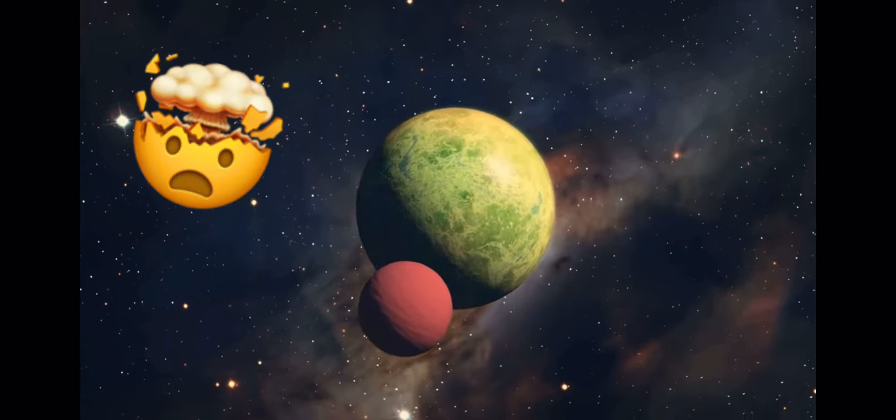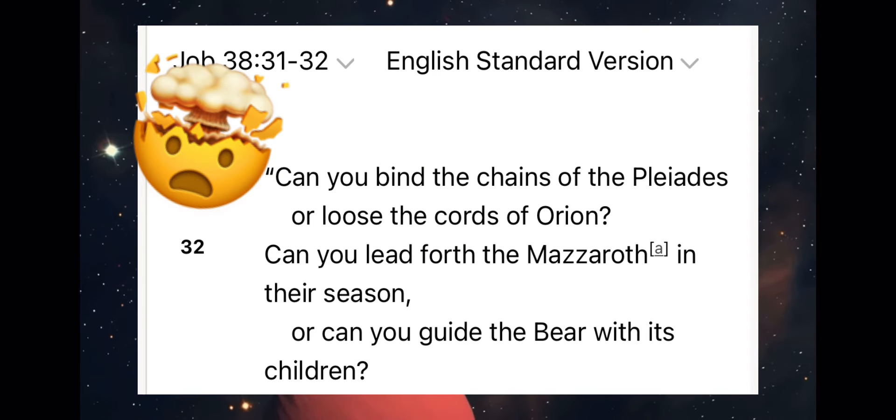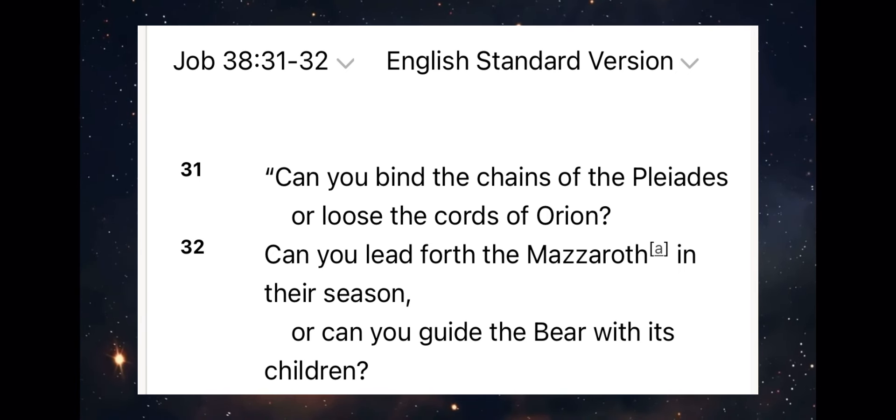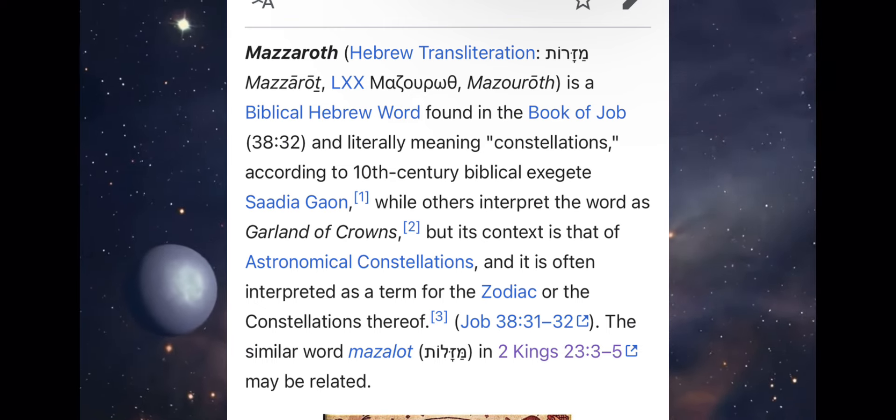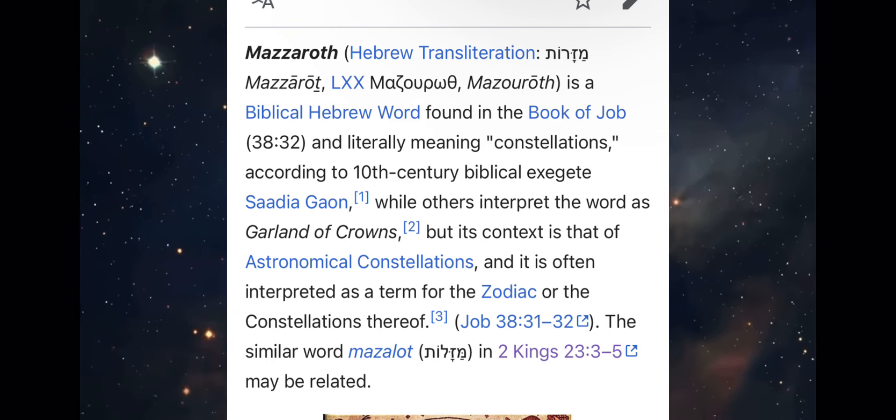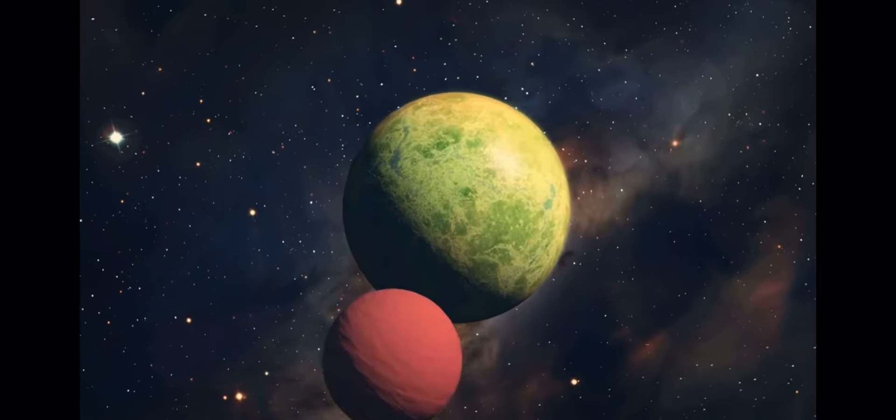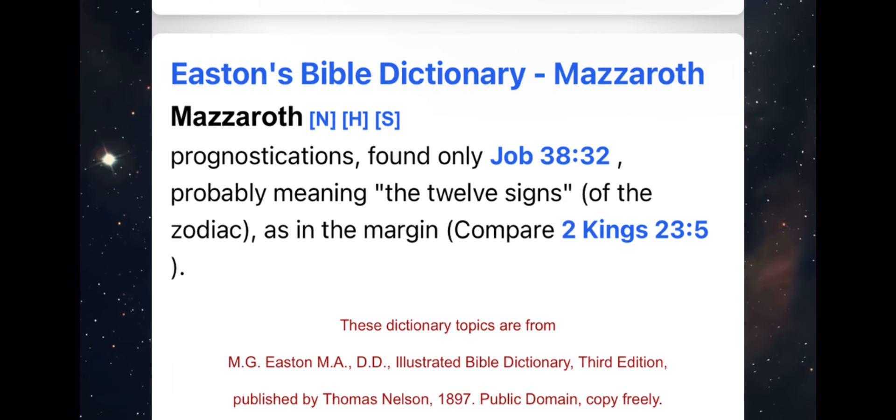But in the book of Job, you see something very interesting. God was speaking to Job and saying, can you lead forth the Mazzaroth in their season? You see interpretations in meaning how Mazzaroth means constellation, or also there's interpretation meaning the Zodiac. That the Mazzaroth in the Bible means the Zodiac.